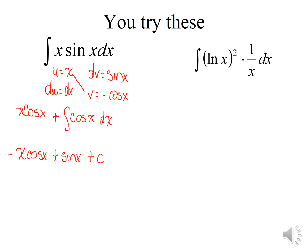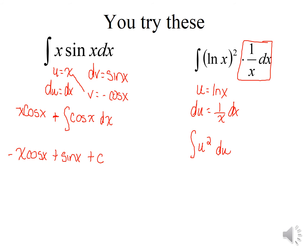Before we begin integrating, we always want to try the simplest solution first. Those of you who had me last semester know the term: think horses, not zebras. When I look at this problem, I think maybe I could use U substitution — if I let U equal the natural log of X, then dU equals 1 over X dX, which is in our original problem. So this is a simple U substitution problem. Integrating gives one-third U cubed plus C, which substitutes to one-third times the natural log of X quantity cubed plus C.